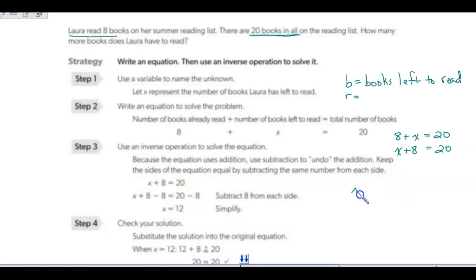Well, one thing I can do is called undoing. So, because I know if I add 8 to x, I'm going to get 20. If I subtract 8 from both sides, x is going to be 20 minus 8 is 12. And so, this is telling me that she has 12 books left to read.